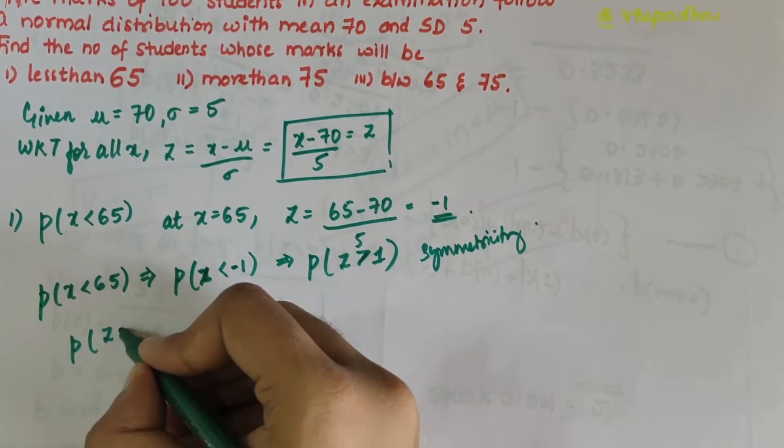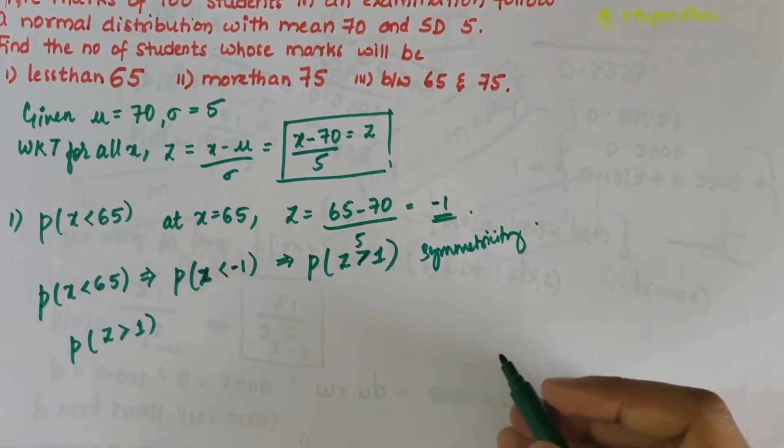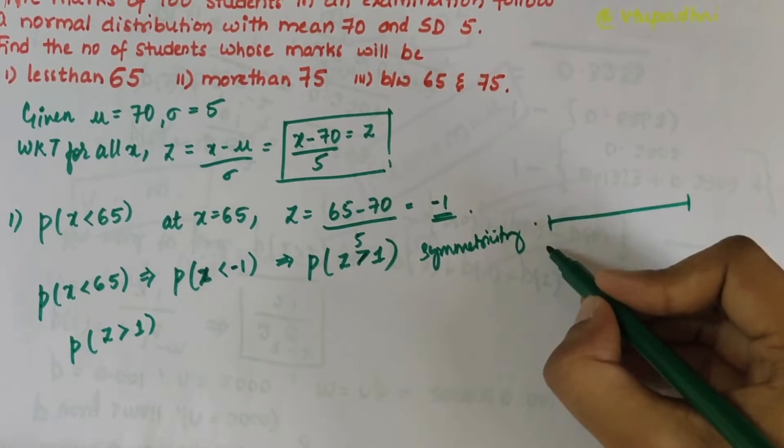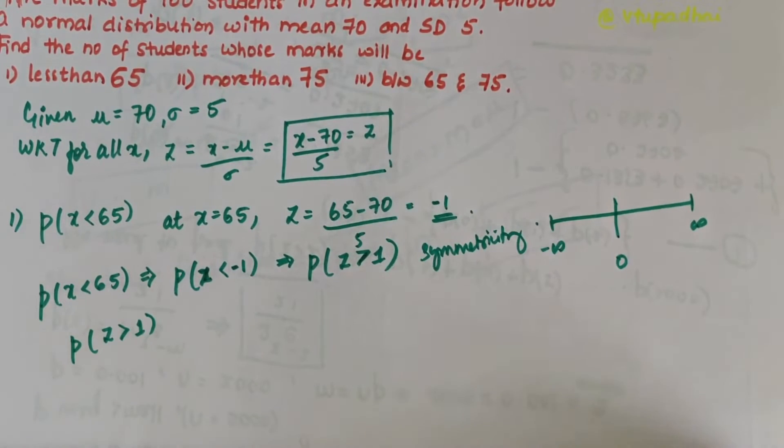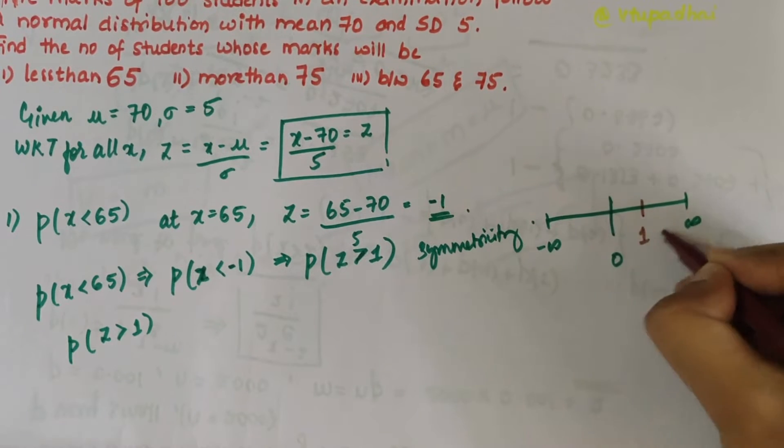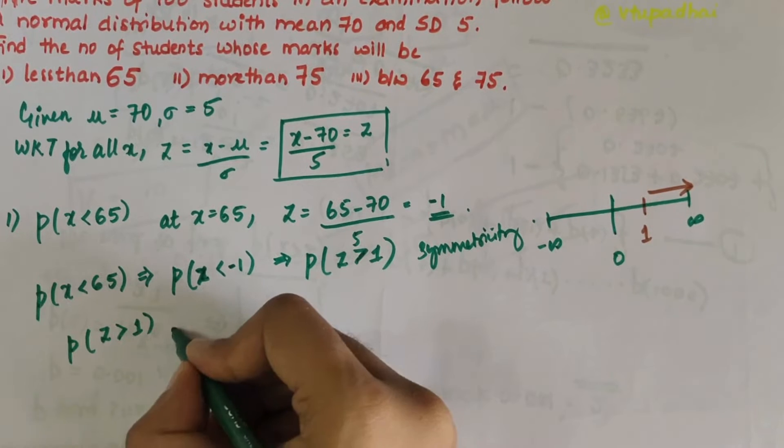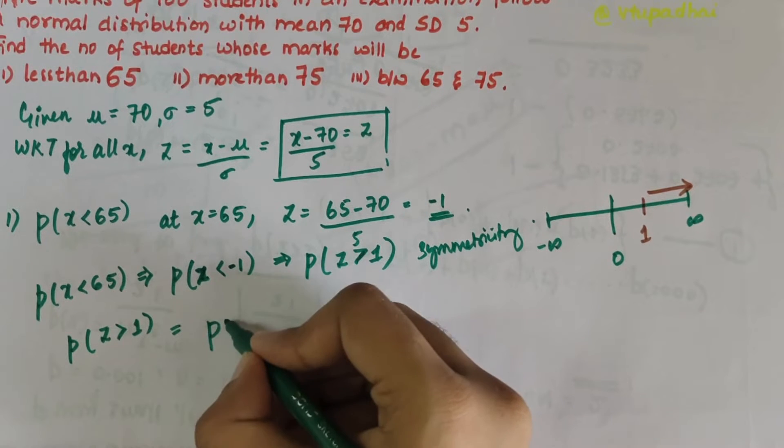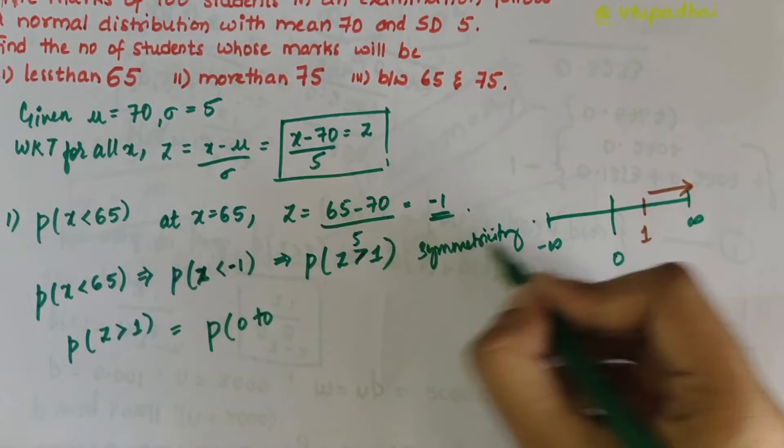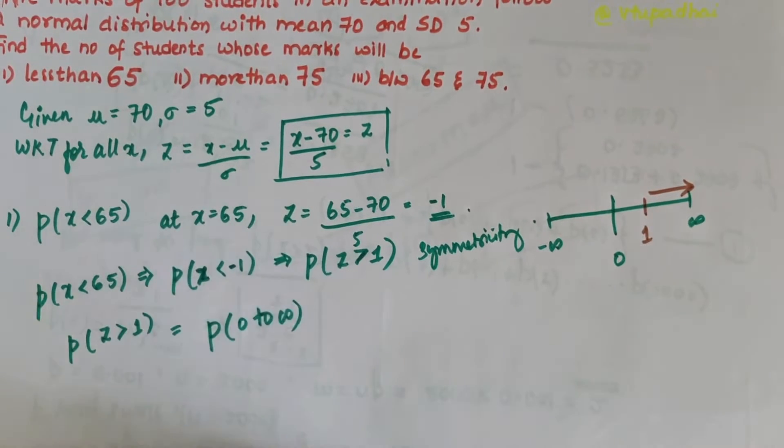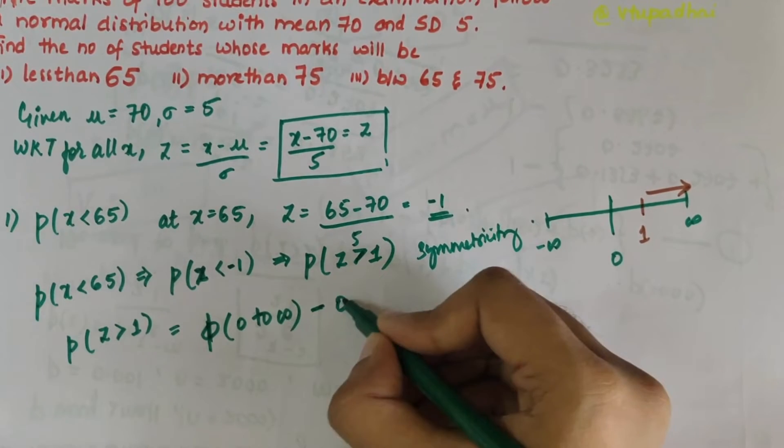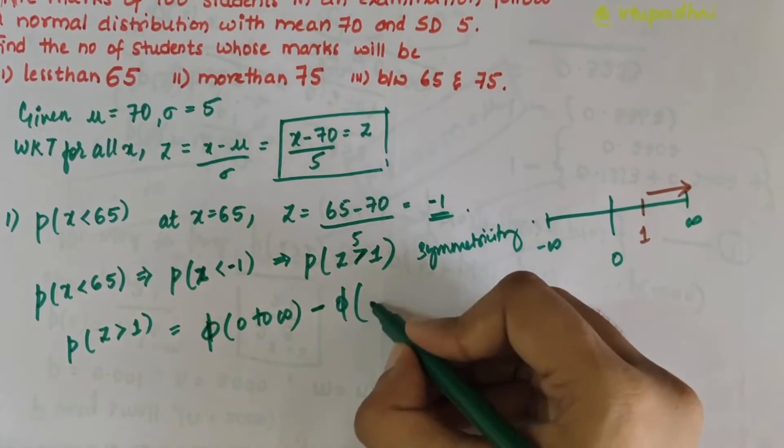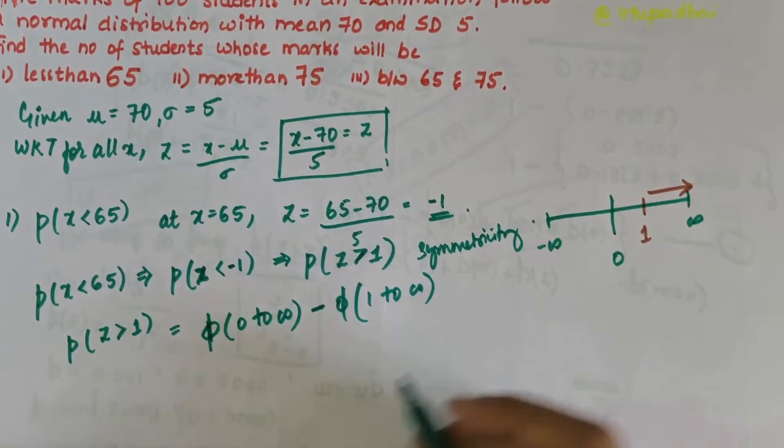P(z > 1) means on a number line from minus infinity to infinity with 0 in the middle, z greater than 1 means from 1 to infinity. For that, we'll take P(0 to ∞) minus P(0 to 1).